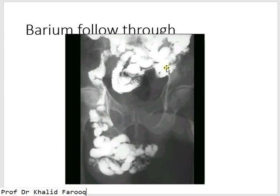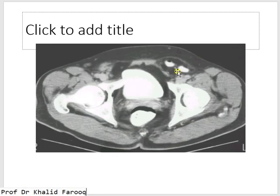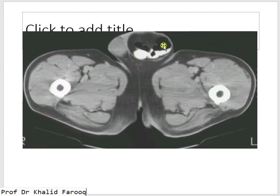On barium follow-through examination, small bowel loops are herniated through the inguinal region into the scrotal sac — inguinal scrotal hernia leading to intestinal obstruction. Hernia can also lead to intestinal obstruction. On CT examination of the pelvis, contrast outlines the urinary bladder and large bowel, and contrast-filled small bowel loops are seen in the inguinal canal on the left side. The same patient shows small bowel loops containing air and contrast with mesentery in the scrotal sac.